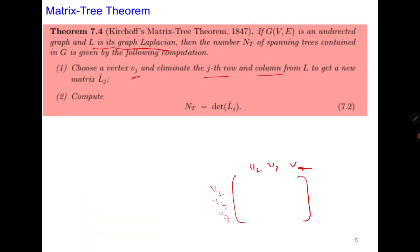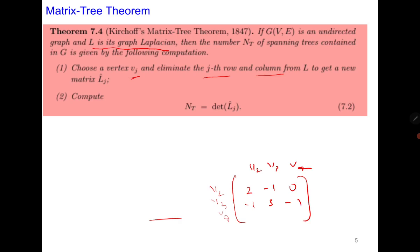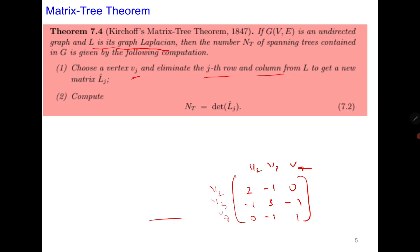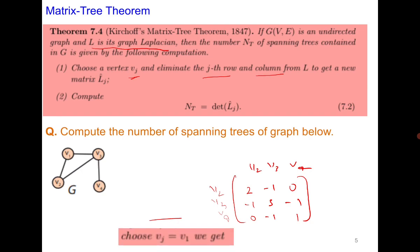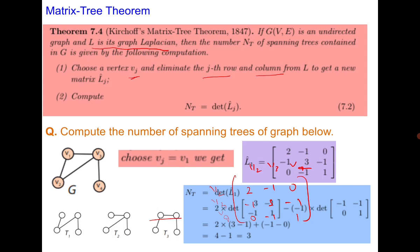From the previous slide, deleting the first row and first column gives us the 3×3 matrix with entries: row 1 is (2, -1, 0), row 2 is (-1, 3, -1), and row 3 is (0, -1, 1). Computing its determinant gives 3.